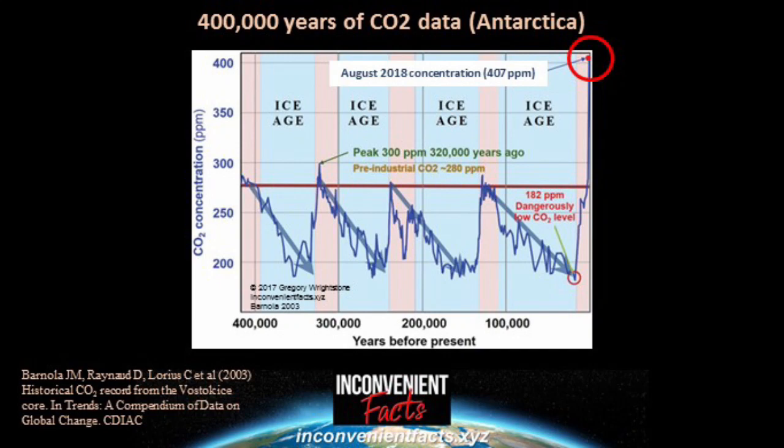We ended the first part of this series on whether CO2 levels are too high or too low with a chart showing 400,000 years of carbon dioxide concentrations from Antarctic ice cores. The 400 parts per million concentration level we're at right now is significantly higher than what it's been through other interglacial periods throughout the last 400 or even 800,000 years. Look down at the bottom right — the low level of carbon dioxide at the end of the last ice age fell to 182 parts per million, an alarmingly low level.